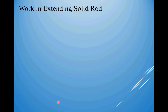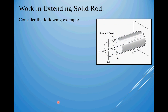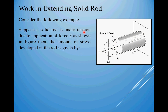The next one: work in extending a solid rod. Consider this example. Suppose we have a solid rod with a circular cross-sectional area and we are applying an effort F. Suppose the solid rod is under tension — meaning we have an elongation of this rod due to application of force F. The amount of stress developed in the rod is given by sigma equals F by A, where sigma is the stress, F is the force applied, and A is the area of the rod. We need two factors to calculate W — F and D. Writing this equation in terms of F, it will be equal to sigma into A.